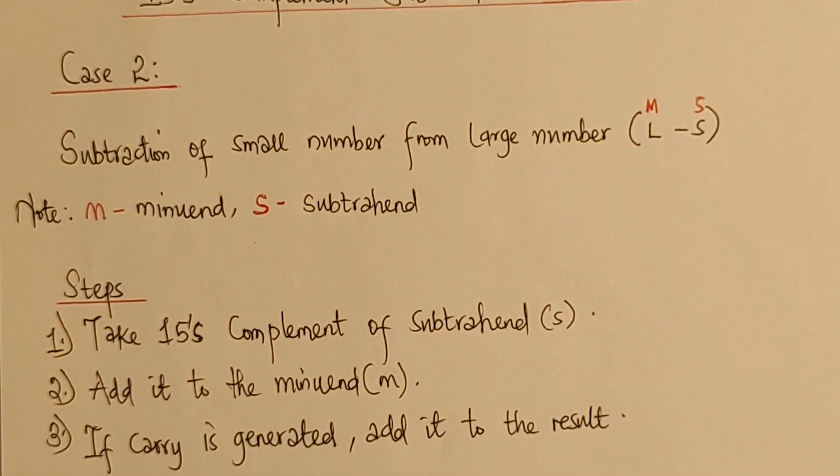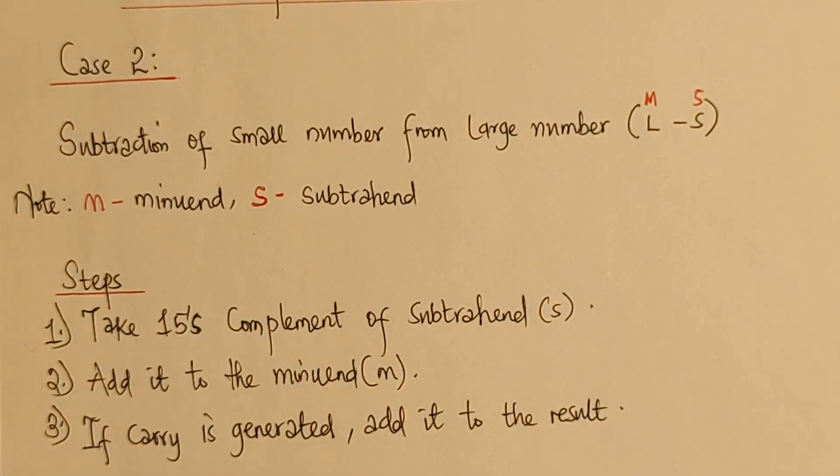Now, we have basically three steps we need to understand before using the 15's complement subtraction process. So let me talk about the steps. The first step is to take the 15's complement of S, which is the subtrahend. The second is whatever value we get from step 1, being the 15's complement of subtrahend, we will add it to the minuend, which becomes our step 2.